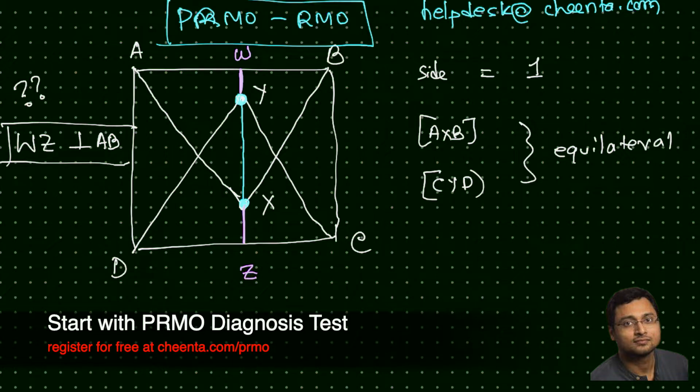Now if you know that this is perpendicular to AB, you also know that the length of it is 1. Because this is 1 and these two will be parallel, so WZ will also be 1.